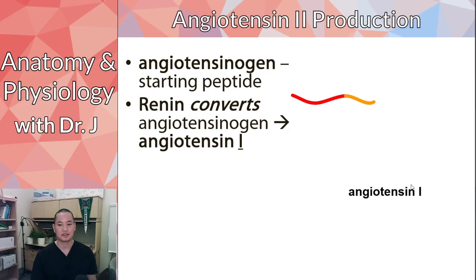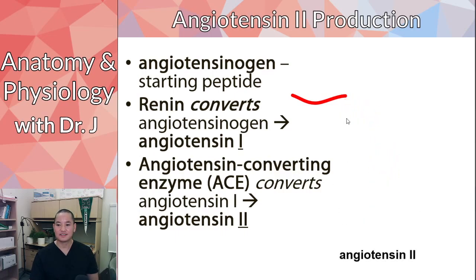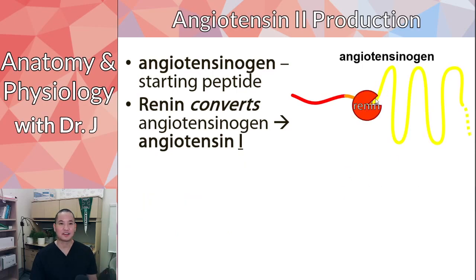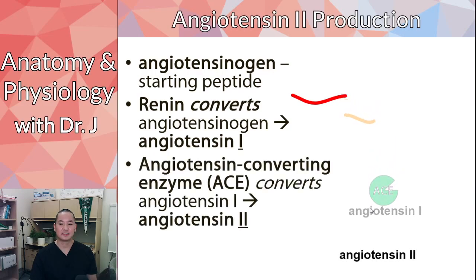We're not at angiotensin 2 yet — there's another step. A different enzyme called angiotensin converting enzyme, often abbreviated ACE, converts angiotensin 1 to angiotensin 2. They all came from the same original protein, but this is a further step in processing. ACE cleaves angiotensin 1 to make it into angiotensin 2.